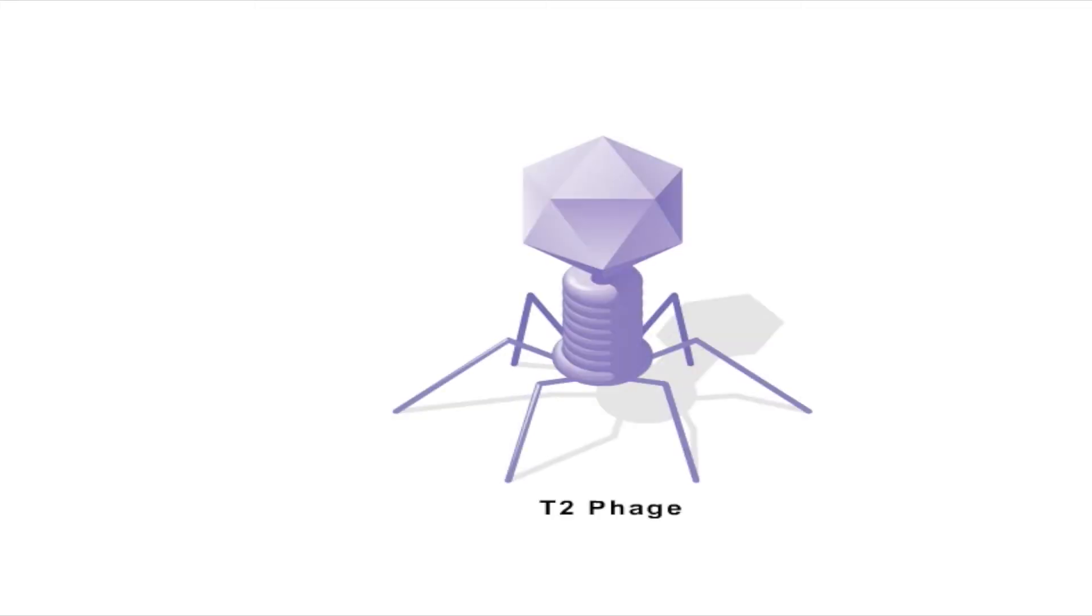The phage, which infects E. coli, consists of a head, sheath, tail, and baseplate made of different proteins. DNA is packaged within the head of the virus.